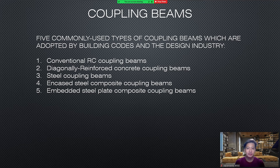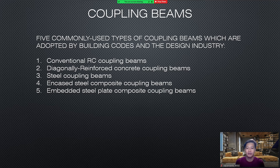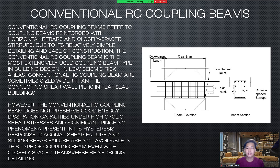There are 5 commonly used types of coupling beams which are adopted by building codes in the design industry. The five types are: 1. Conventional RC coupling beams; 2. Diagonally reinforced concrete coupling beams; 3. Steel coupling beams; 4. NK steel composite coupling beams; 5. Embedded steel plate composite coupling beams. Conventional RC coupling beams are reinforced with horizontal rebars and closely spaced stirrups. Due to its relatively simple detailing and ease of construction, the conventional RC coupling beam is the most extensively used coupling beam type in building design.